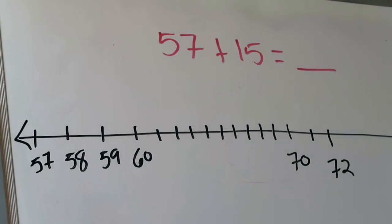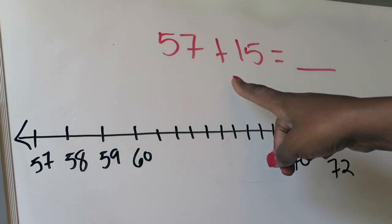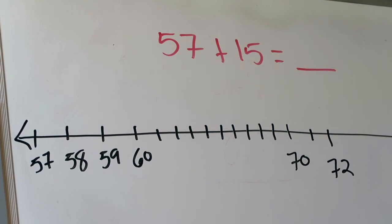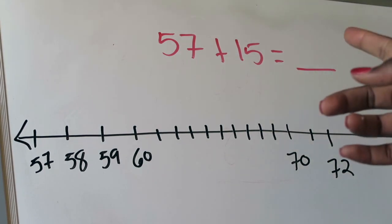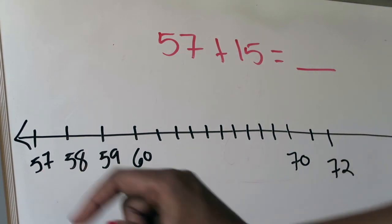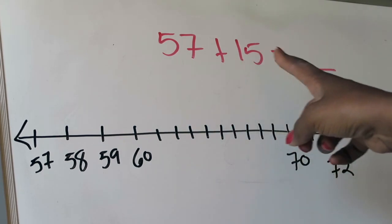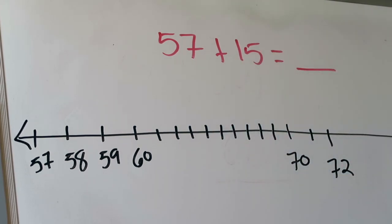All right, so here we have our first example. In this example, we are going to be adding 57 plus 15 and we are going to use a number line to do that. I've already created the number line we're going to use for this particular problem, and we're going to walk through how exactly this number line helps us out. The number line starts at 57 because that is your first addend, and I'm going to be adding 15 to that. The way I want to use this number line is I want to count to my first 10.